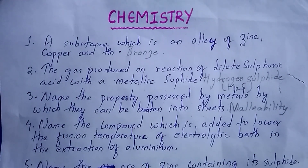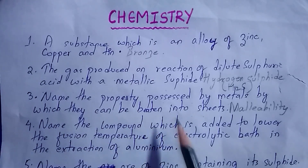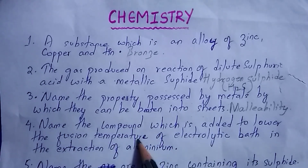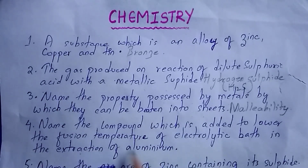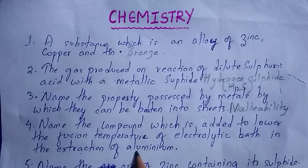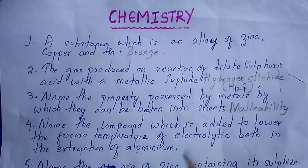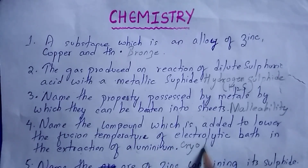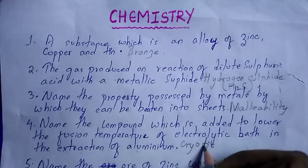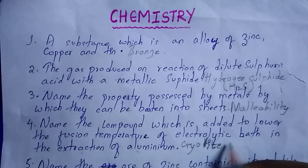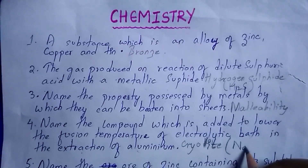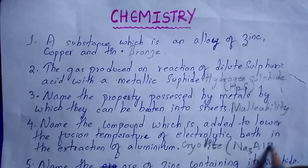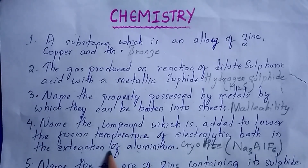Next question: name the compound which is added to lower the fusion temperature of the electrolytic bath in the extraction of aluminum — it is cryolite. The formula for cryolite is Na₃AlF₆. This question is repeated most of the time in your board exams.